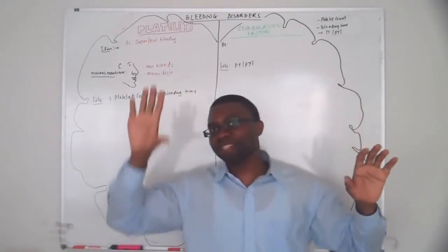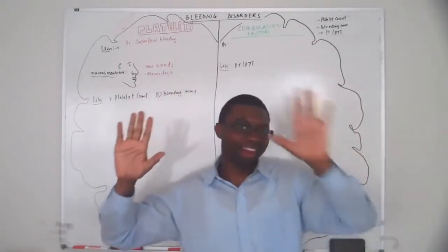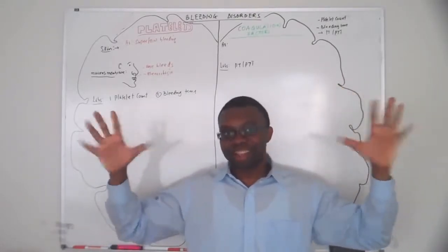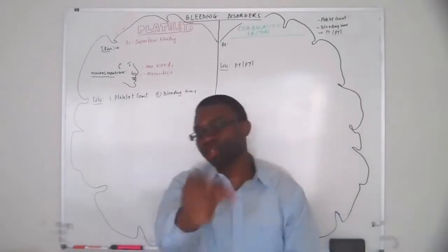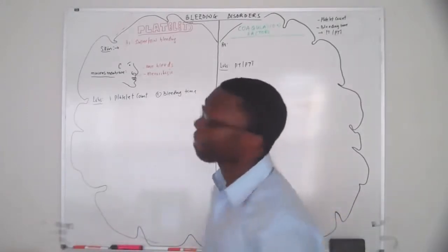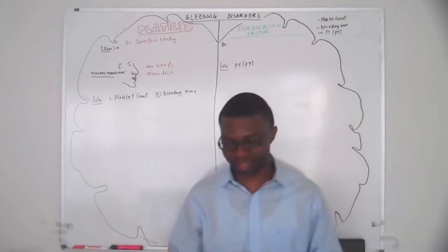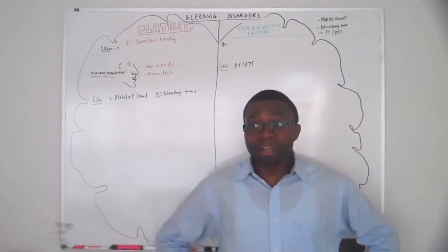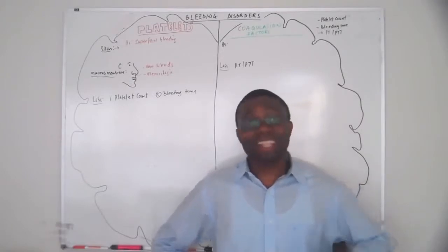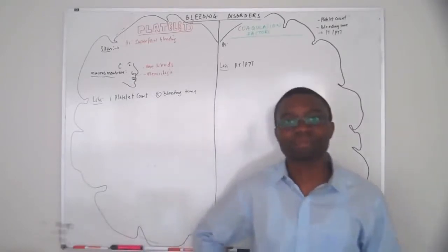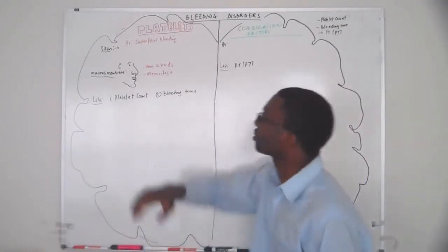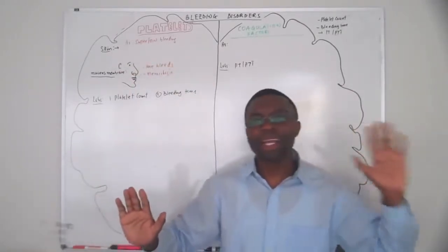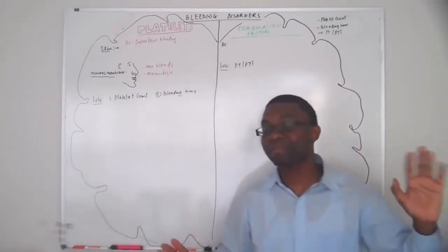Remember, platelets make the primary hemostatic clot. And the coagulation factors are going to convert fibrinogen into fibrin and everything comes together. Now, patients are going to come into the hospital and tell you they're bleeding. You need to figure out: is it a platelet problem, or are they missing some coagulation factors?